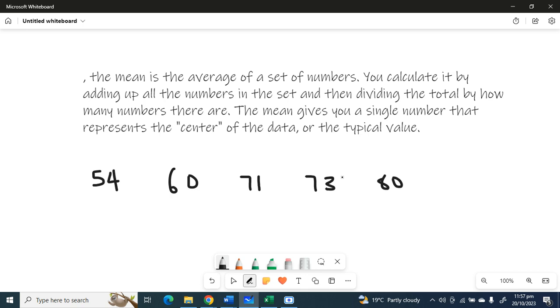The mean basically represents the data set. So the way we calculate the mean: you add up the numbers in the data set and then you divide it by the number of numbers in the data set. So here, to get our mean, which is usually denoted as X bar, we add up the marks.